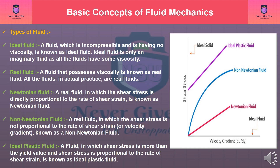Types of fluid. Ideal Fluid: a fluid which is incompressible and has no viscosity is known as an ideal fluid. Ideal fluid is only an imaginary fluid, as all fluids have some viscosity. Real Fluid: a fluid that possesses viscosity is known as a real fluid. All fluids, in actual practice, are real fluids.